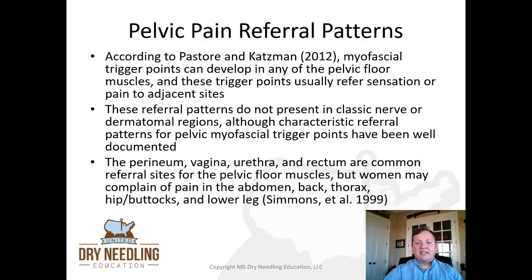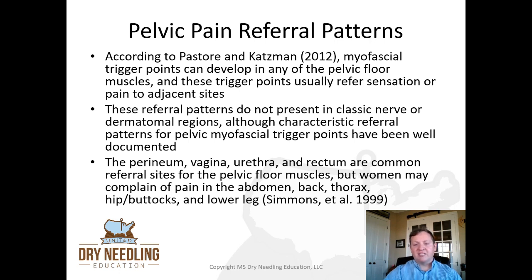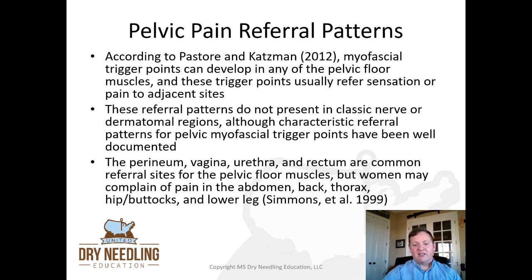According to Pasteur and Katzmann, myofascial trigger points can develop in any of the pelvic floor muscles, and these trigger points usually refer sensation or pain to adjacent sites. These referral patterns do not present in a classic nerve or dermatomal region, although characteristic referral patterns for pelvic myofascial trigger points have been well documented. The perineum, the vagina, urethra, and rectum are common referral sites for the pelvic floor muscles.